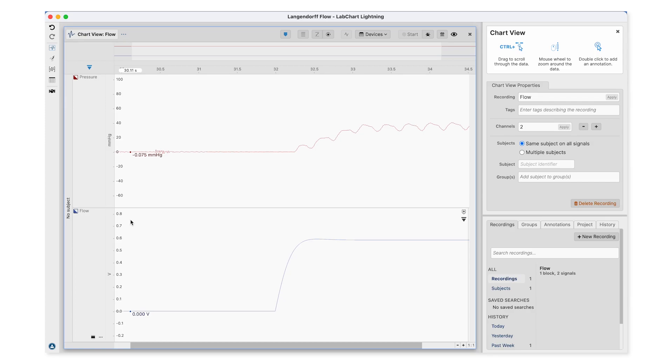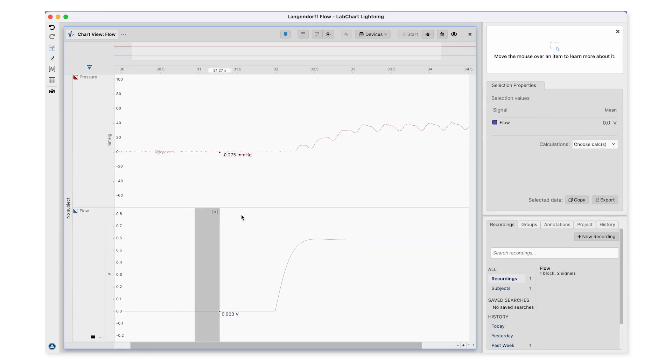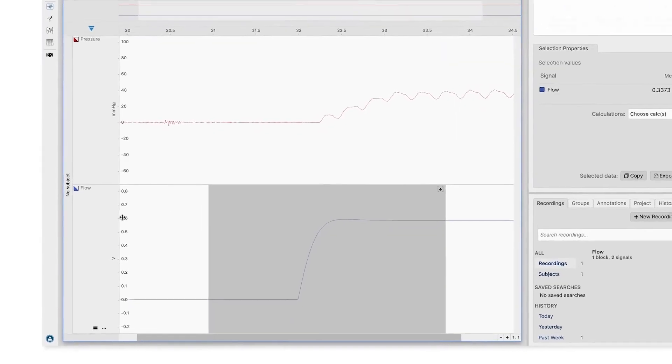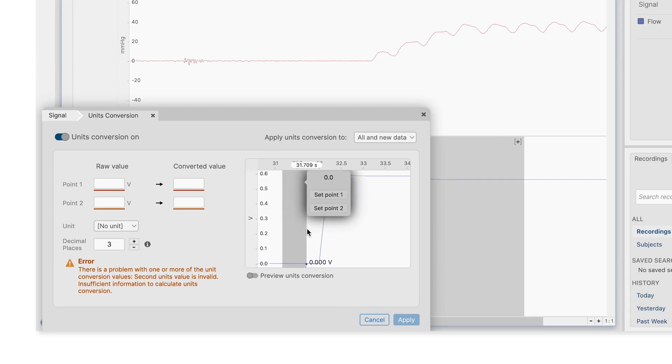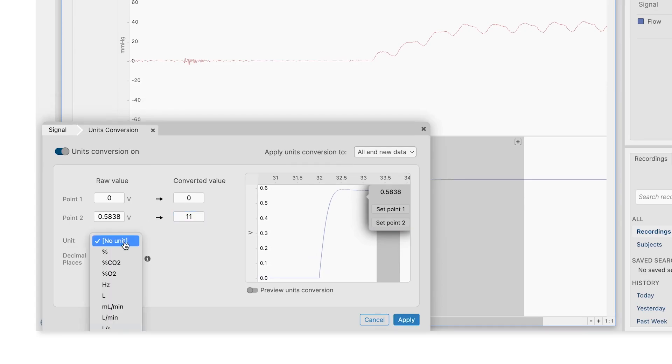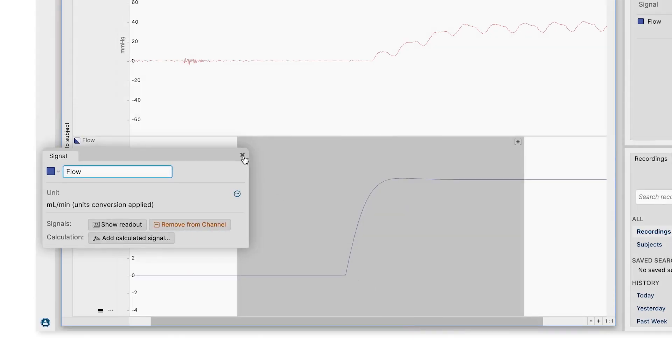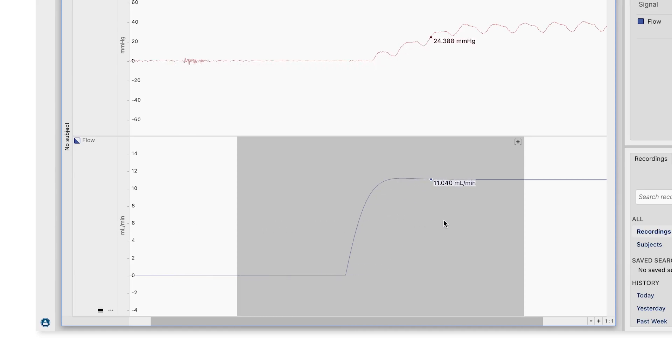In LabChart Lightning we go to the channel where the flow output of the STH pump controller is connected to, and select the data where the pump goes from zero to 11. We then select channel, then units. For the zero level we set that as 0.1, that is zero. And then for where it's constant we set that as 0.2 and that will be 11, with the units being milliliters per minute. Once we apply this, we now have the units for the flow channel in milliliters per minute.